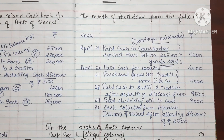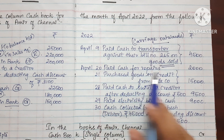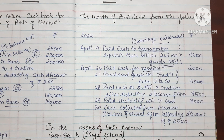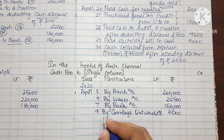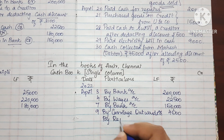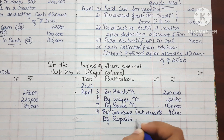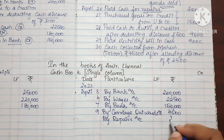On the 20th, paid cash for repairs. This is a payment, so it goes on the credit side. The entry is: By Repairs Account. The amount is Rs. 2,000. The date is the 20th.